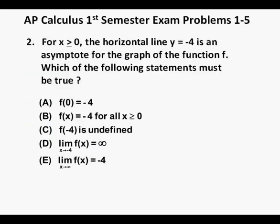Problem 2. For x is greater than or equal to 0, the horizontal line y equals negative 4 is an asymptote for the graph of the function f, which of the following statements must be true and we have our answer choices a through e below.